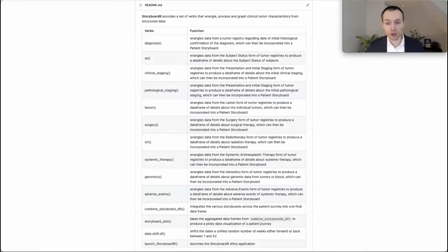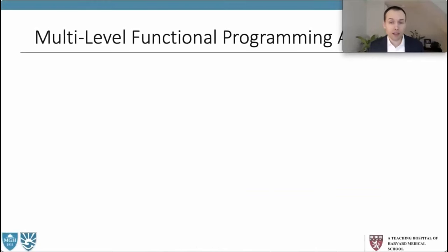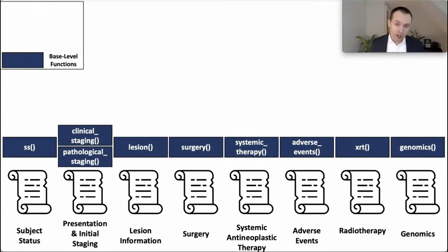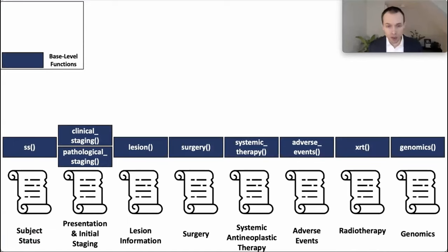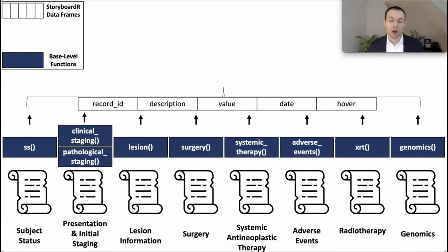I want to discuss a few of the data science and software engineering principles of Storyboarder. We think about the functions in three different levels of functional programming. We've created a series of base-level functions specific to each data collection instrument — functions for subject status, staging, lesions, surgery, antineoplastic therapy, and so forth. All of these base-level functions parse the data and wrangle it to create the same data frame — a data frame with five vectors: record ID, description, value, date, and hover.